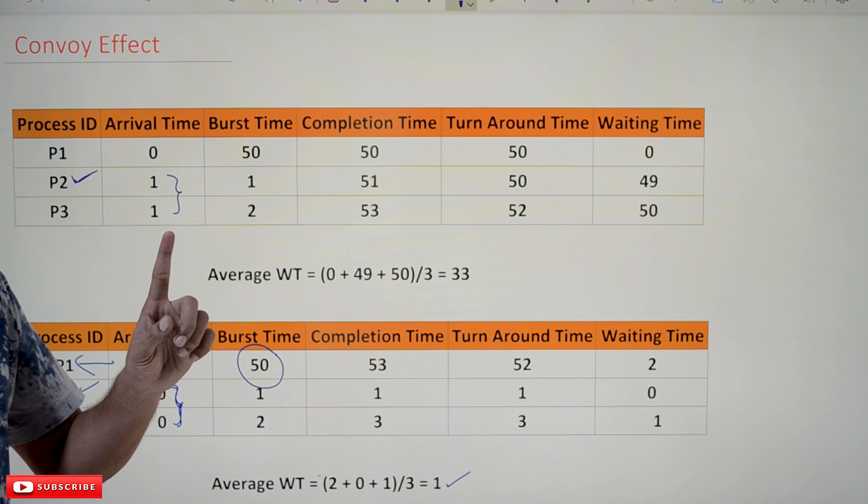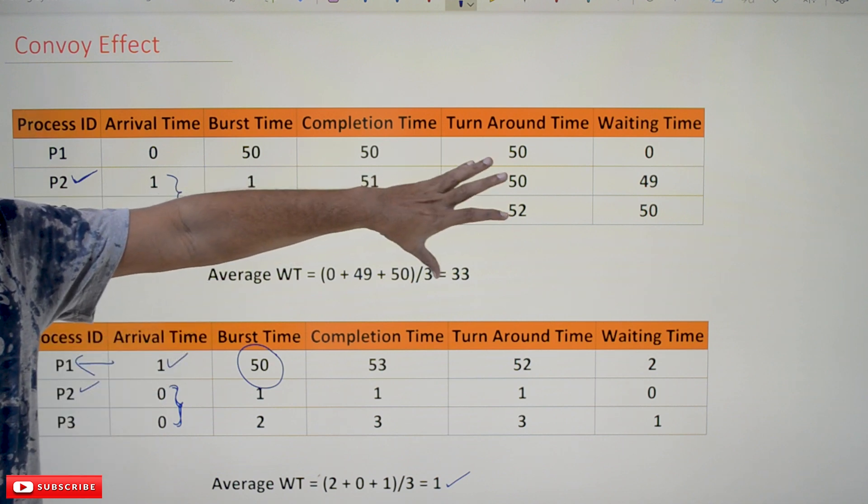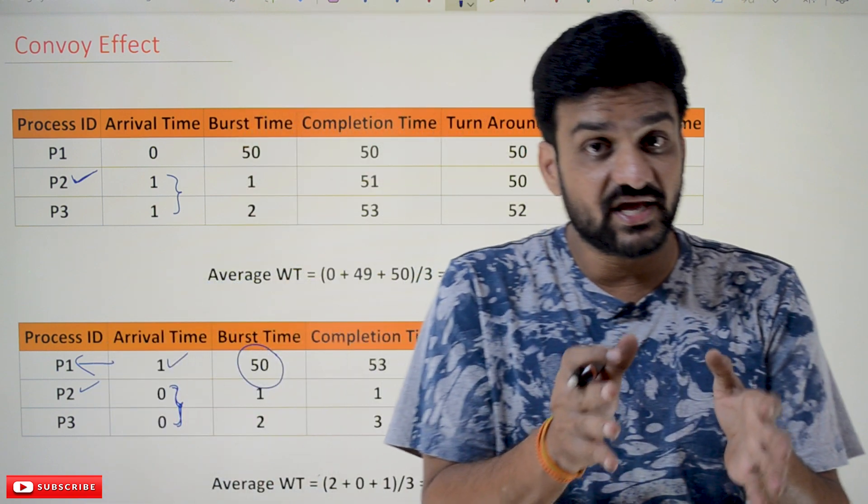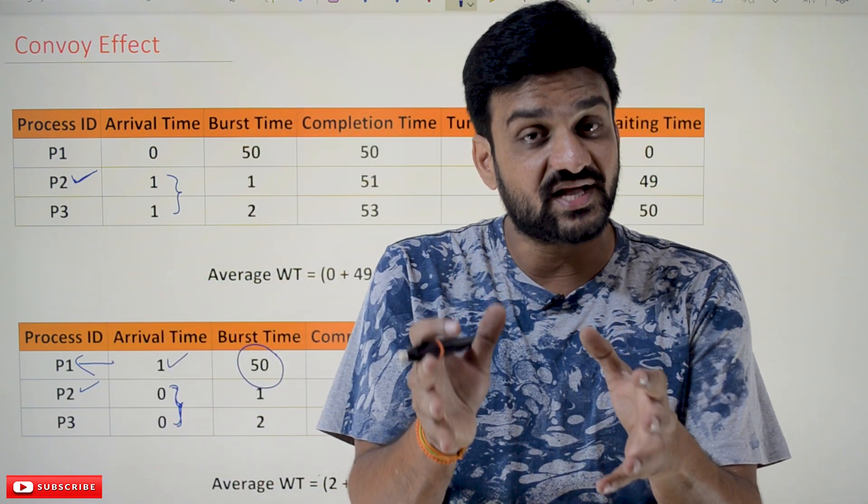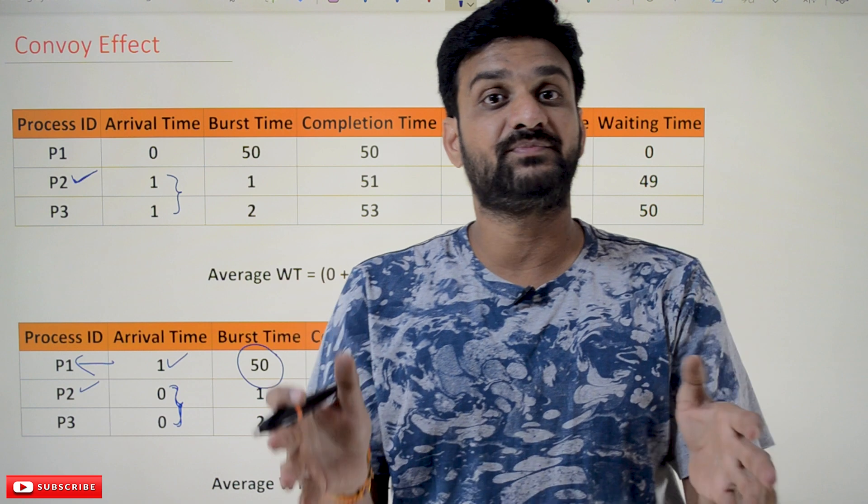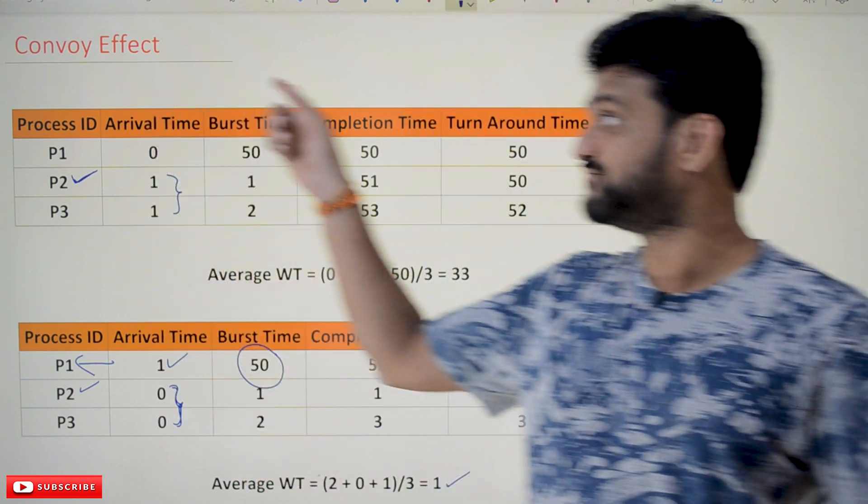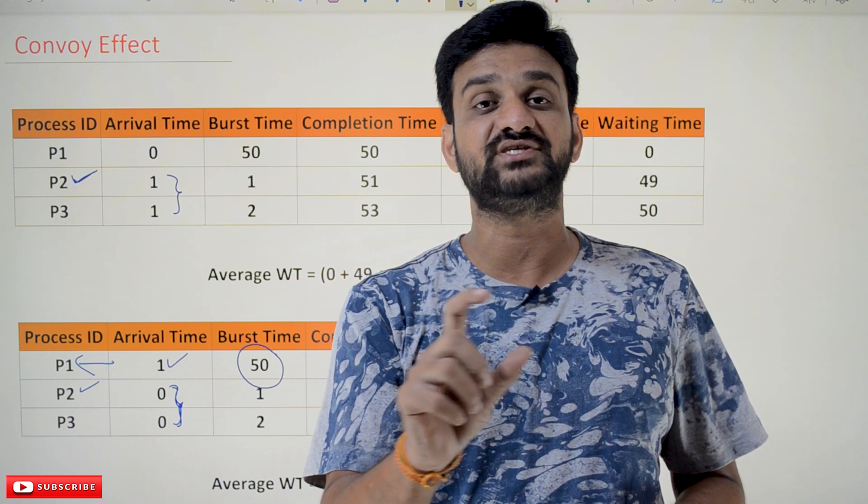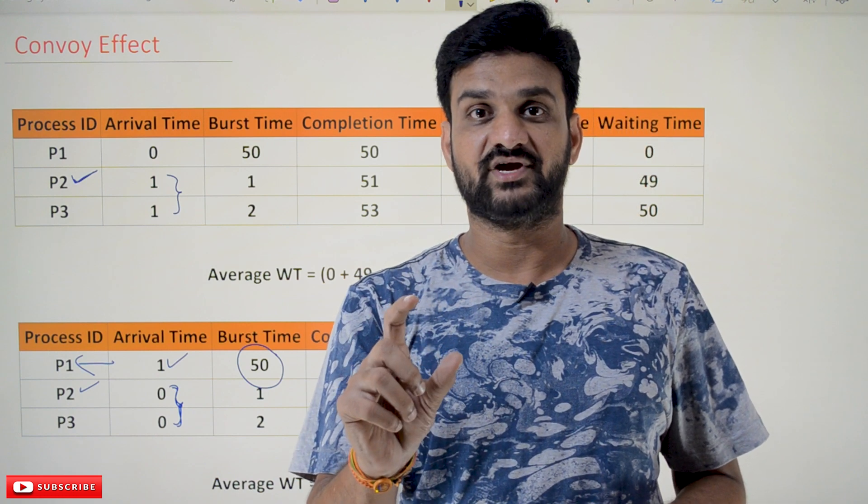So this is how the FCFS is going to increase the average waiting time of the processes, and that effect is what we call as convoy effect. That is one of the very important disadvantages of the FCFS, which is convoy effect. Hope you got the clarity on this concept.